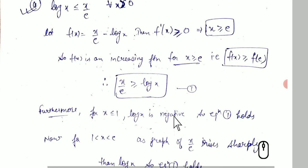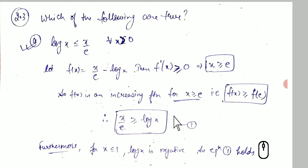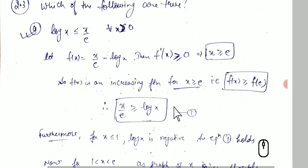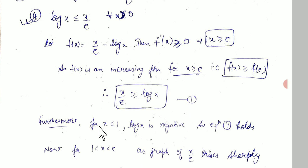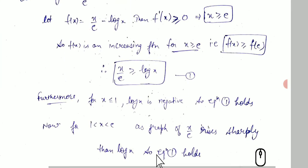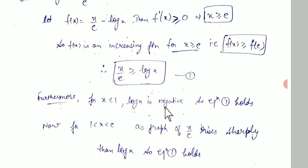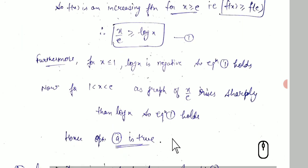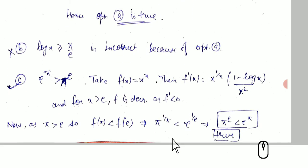To summarize: we checked three regions — x ≥ e (using derivative test), x ∈ (0,1) (log x is negative so automatically satisfied), and x ∈ [1, e] (graph rises sharply). So option A is confirmed true. Since option A states log x ≤ x/e, option B which states log x ≥ x/e is false.